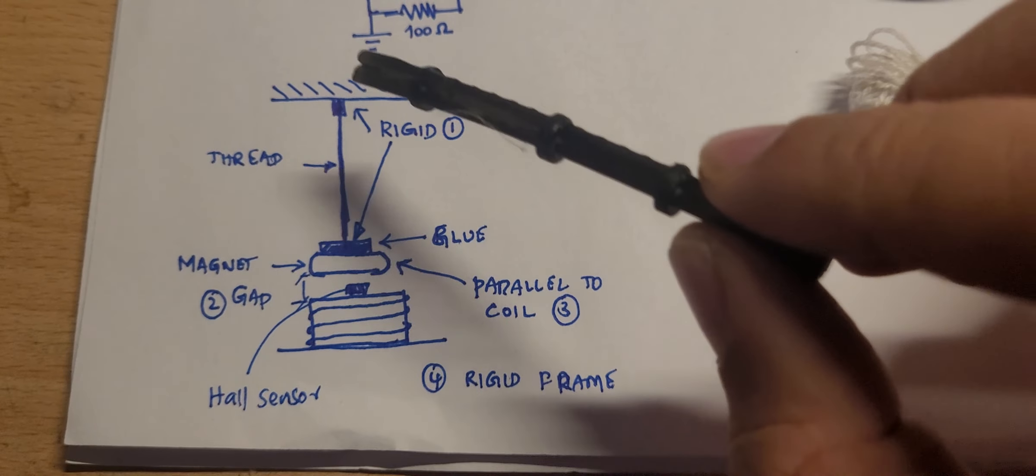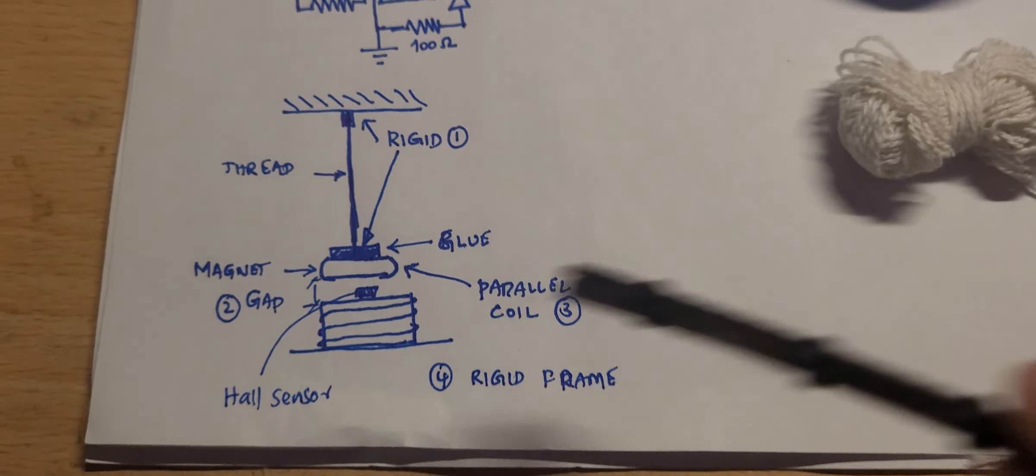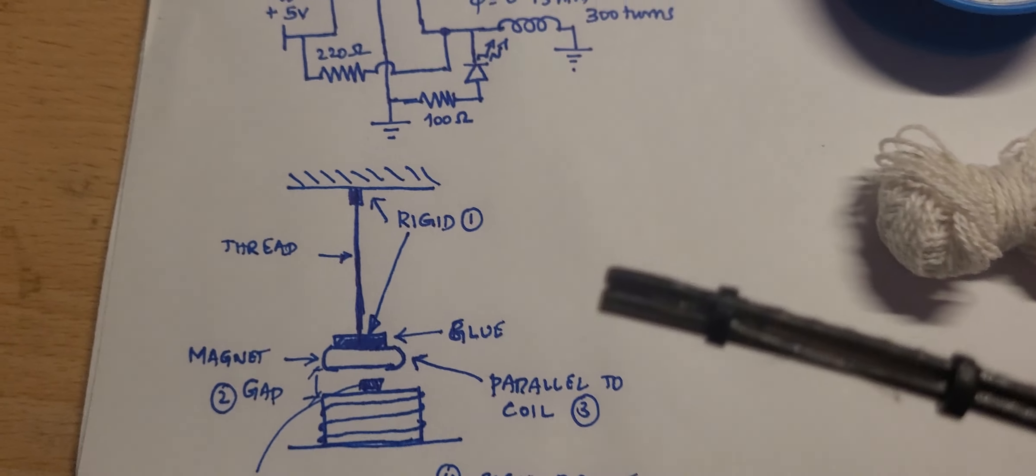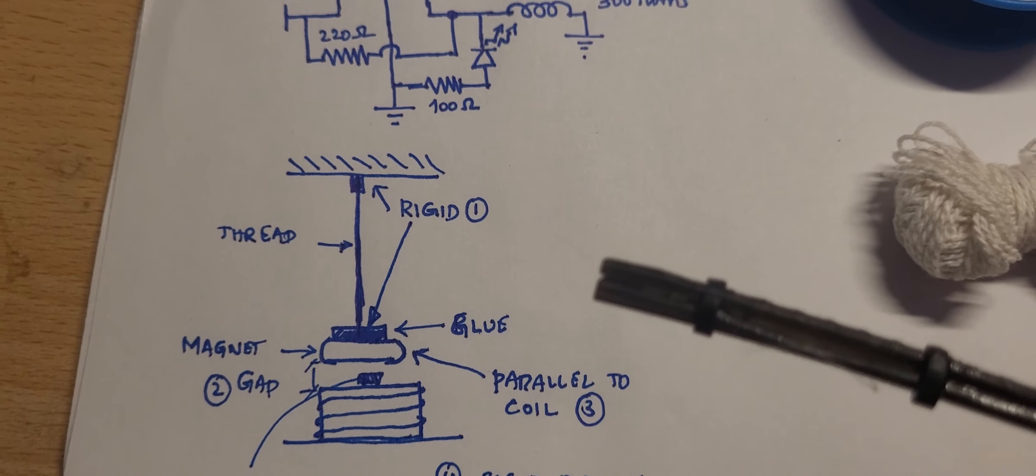I have used a flexible thread as you can see here. This thread is a simple one. If this was a rigid rod it would have oscillated in the same position, there's no possibility to twist in directions. But I wanted to make it challenging so I took a thread.